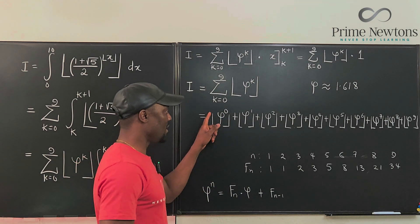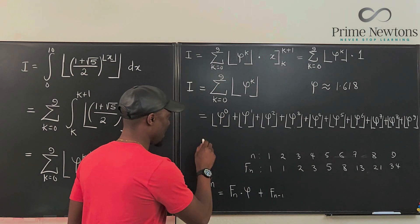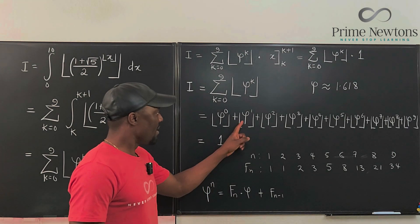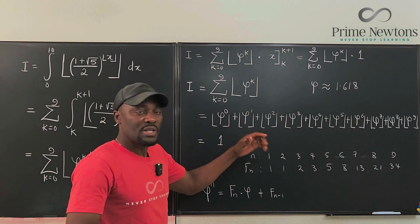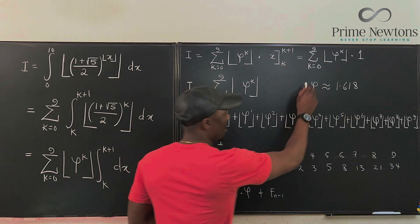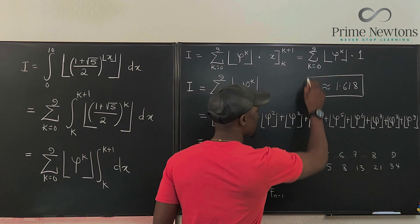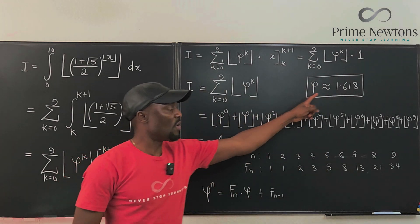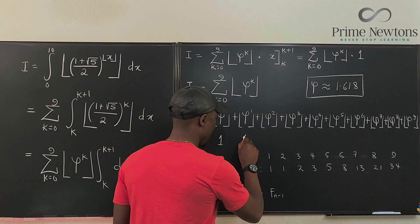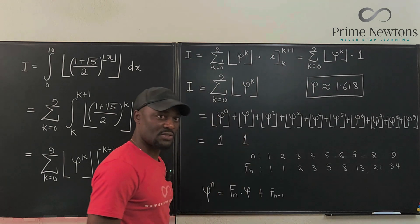I'm just going to do two examples. This is obvious. Anything raised to power zero is one, and the floor of one is one. So our answer here is one. Phi to the one is 1.618 approximately. So the floor of 1.618 is going to be one. So that's the answer to the second one.